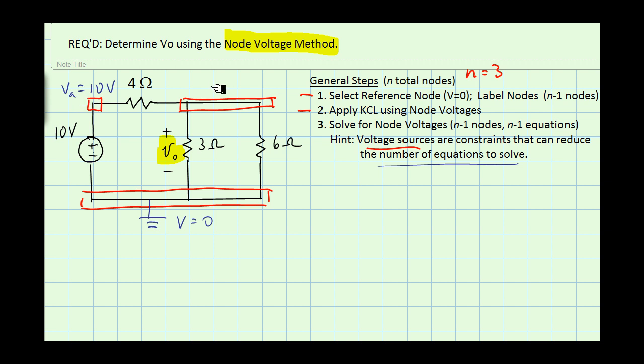And finally, I'll label the node up in the upper right as VB, and that node is unknown. So we have one unknown, so we're going to have to generate only one equation. So that's pretty nice.